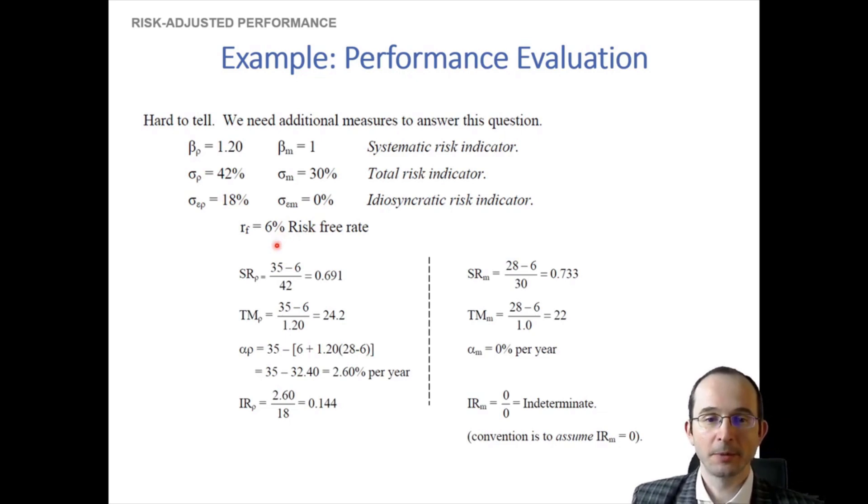So now let's calculate the Sharpe ratio, the Treynor-Mizzoui ratio, the alpha, and the information ratio. So the Sharpe ratio, remember, is the expected return minus the risk-free rate over total risk. We plug those givens in, and we see that the Sharpe ratio of our candidate portfolio is 0.69. How does that stack up to the market? Well, the market's expected return of 28%, still compared against the risk-free rate of 6, of course, and divided by the market's total risk of 30%, it seems like the market actually has a higher Sharpe ratio. So that's not actually a good sign for this portfolio, even though it beats the market in raw terms. It actually turns out that once you risk adjust at least using total risk, then it no longer does per unit of risk.